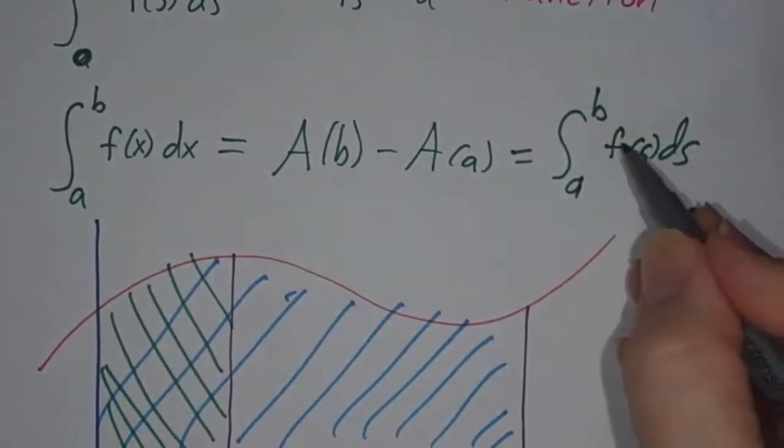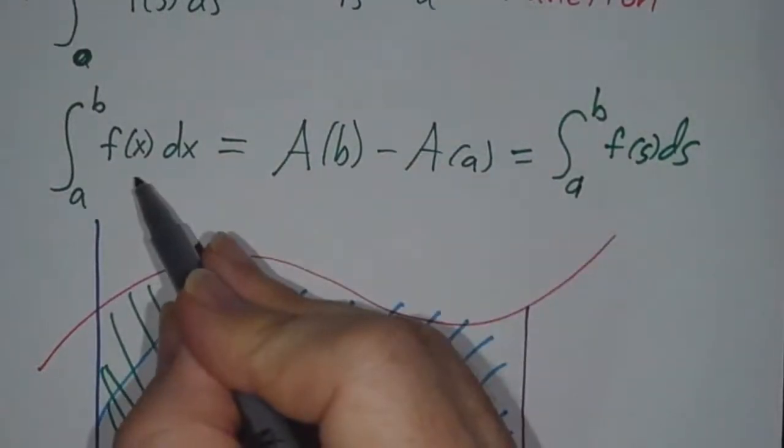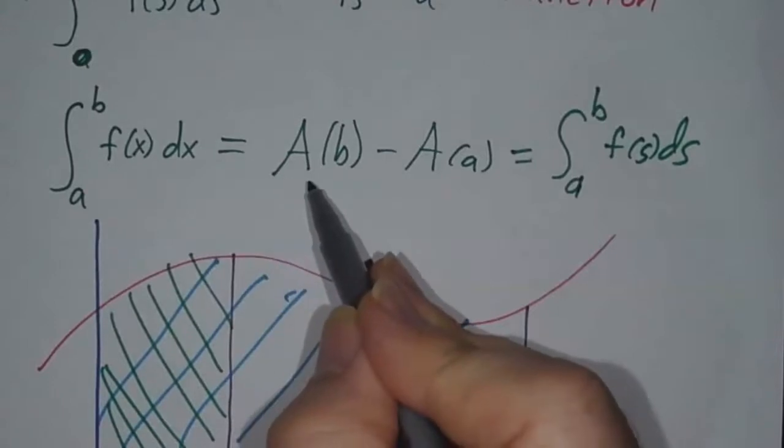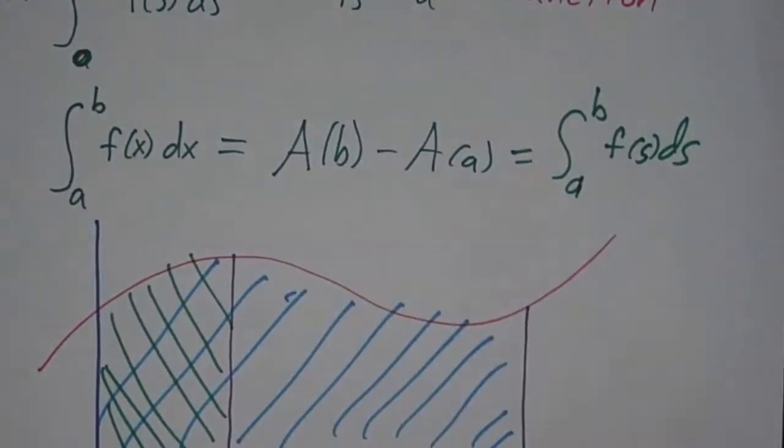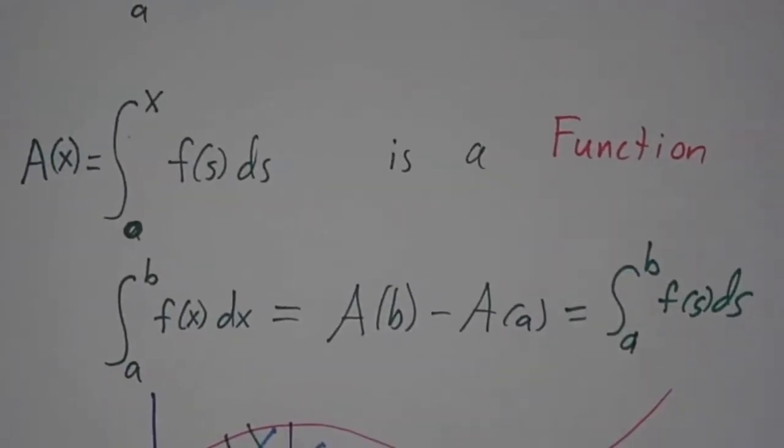But when going from a to b, it doesn't matter what we call our variable. We could just as well call it x. So the integral from a to b of f(x)dx is the accumulation function at b minus the accumulation function at a. If we can get a handle on this accumulation function, we'll be golden for figuring out integrals.